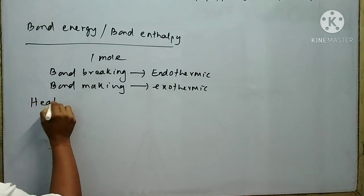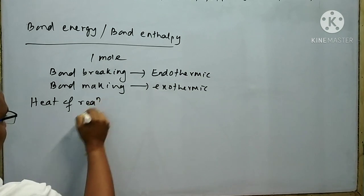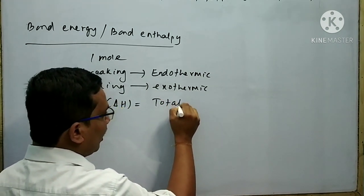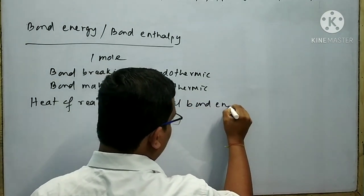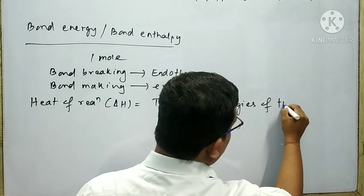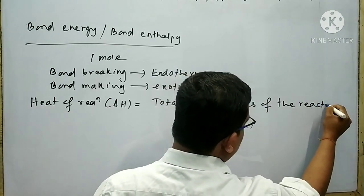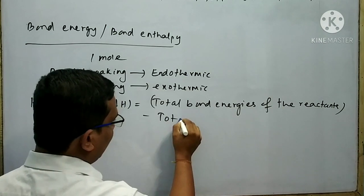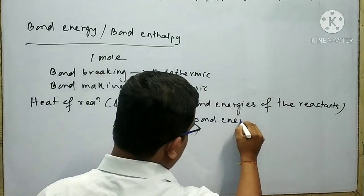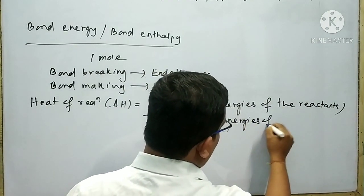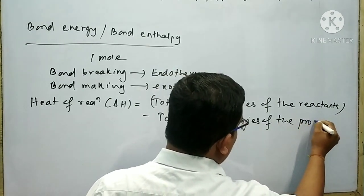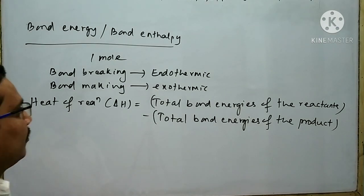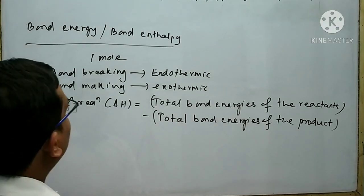Remember an important formula: heat of reaction ΔH equals total bond energies of the reactants minus total bond energies of the products. By the help of this important formula, we can solve problems related to bond energy.